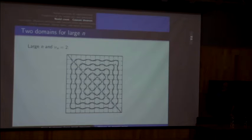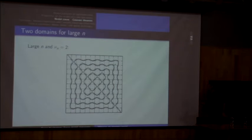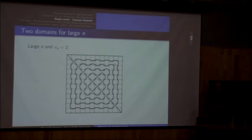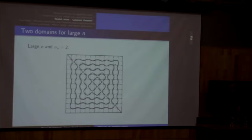Nodal deficiency can be n minus two in such cases. It looked until very recently that nodal deficiency is something uncontrollable — some weird numbers that jump up and down with no regularity — and probably doesn't mean anything. This turned out to be wrong, as the speaker will try to show.